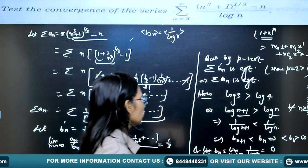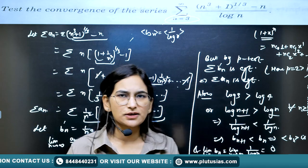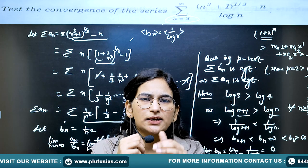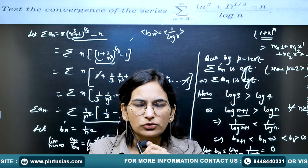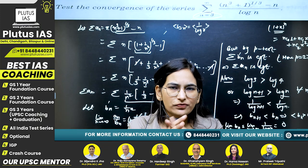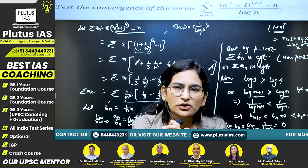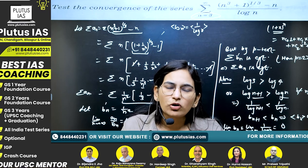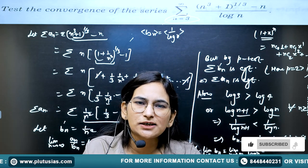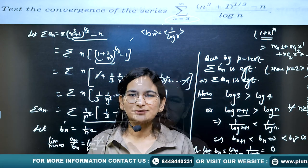So we have shown that the series corresponding to aₙ is convergent, and the sequence bₙ = 1/log n is decreasing as well as tending to zero. All the conditions of Abel's test have been satisfied, and hence by Abel's test, the given series is convergent. For more lectures like this, subscribe and like the channel — stay tuned and keep studying.